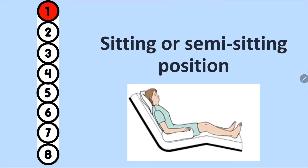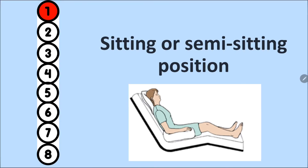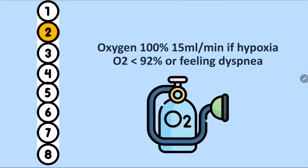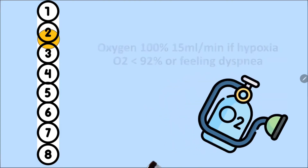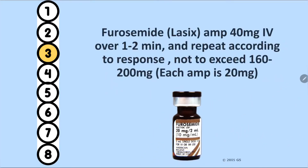Treatment starts with positioning — sit the patient upright or semi-upright, as lying flat causes a sensation of suffocation. Give 100% oxygen at 15 liters per minute if SpO2 is less than 92%, or if the patient feels very dyspneic even with a normal SpO2. Then give furosemide — a loop diuretic — typically two ampoules (each 20 mg) at a time.